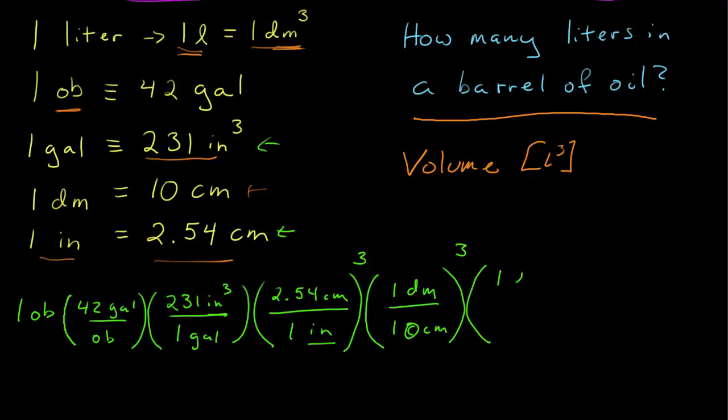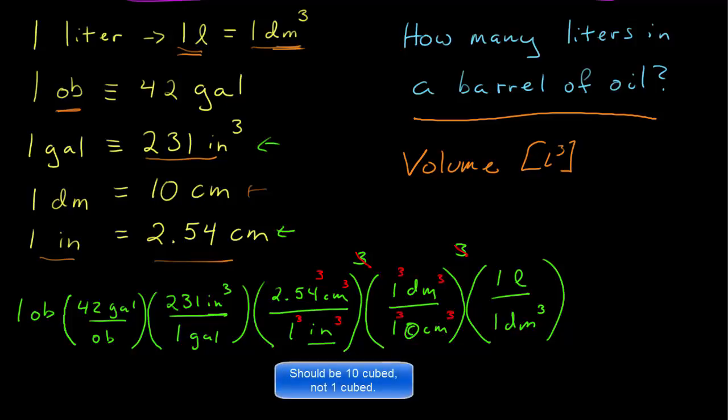Finally I have one liter over one decimeter cubed. The trick is that everything inside this ratio is taken to the third power. So this is 2.54 cubed centimeters cubed, there's a one cubed that doesn't matter, inches cubed. And this is one cubed decimeter cubed, one cubed centimeter cubed.